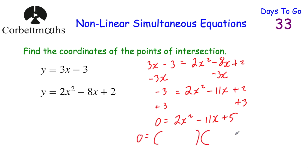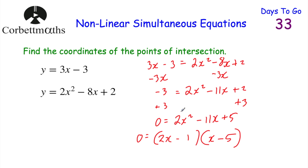Since it's 2x squared, the brackets start with 2x and x. We need numbers that multiply to 5, and with the 2x and x terms give minus 11x. Since we need negatives, I'll try minus 5 and minus 1. Checking: 2x times x is 2x squared, 2x times minus 5 is minus 10x, minus 1 times x is minus x — that's minus 11x. And minus 1 times minus 5 is 5. Correct.